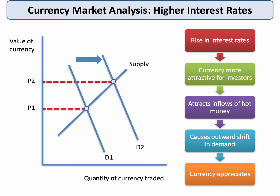In our first example, the central bank has decided to raise interest rates. For example, the Bank of England might increase policy rates from 0.5% to 1%. That rise in interest rates — if it hasn't happened in other countries — is a rise in relative interest rates, and in theory, other things being equal, that will make the currency more attractive for investors looking for a better rate of return. So high interest rates may lead to an inflow of hot money, which causes an outward shift of the demand curve for the currency, and other things being equal, the currency will appreciate in value. For example, if the UK raises interest rates before the ECB does in the eurozone, you might see the pound appreciating against the euro.